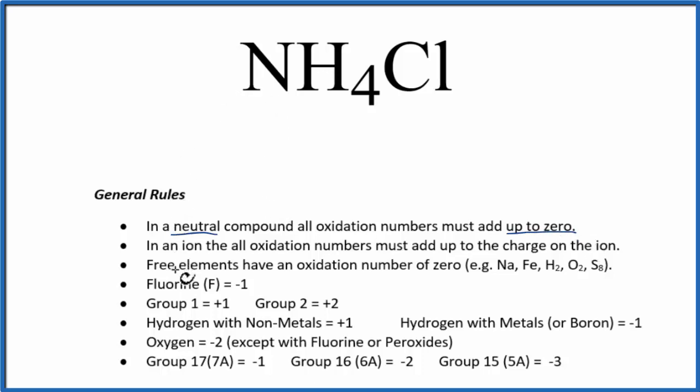So let's look down our list here. We can see that hydrogen, when it's bonded to nonmetals, and these are all nonmetals, hydrogen has a plus 1 oxidation number. We can also look down here and see that in group 17, that's where chlorine's at on the periodic table, that has a minus 1 oxidation number.